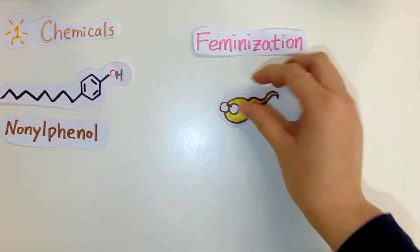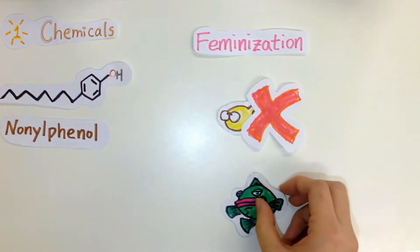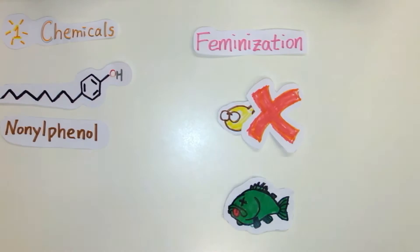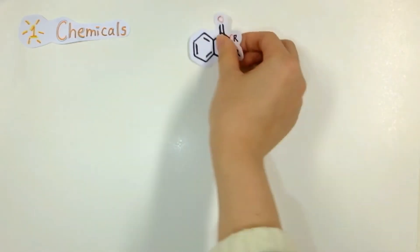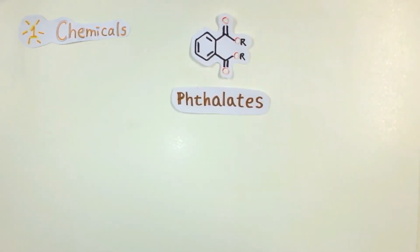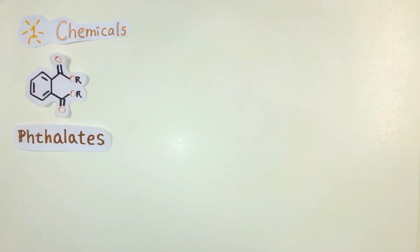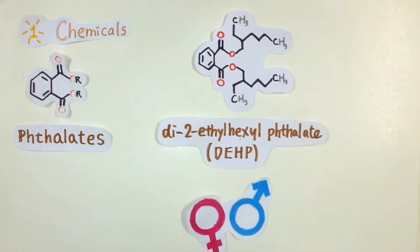They can cause feminization, decrease male fertility, and decrease survival in young fish. Phthalates are used as garment printings in textile industry. They are harmful to human health. For example, DEHP is toxic to reproductive development in mammals.